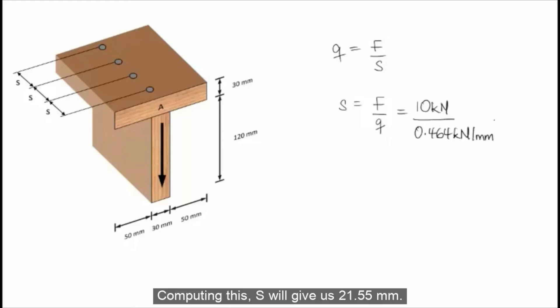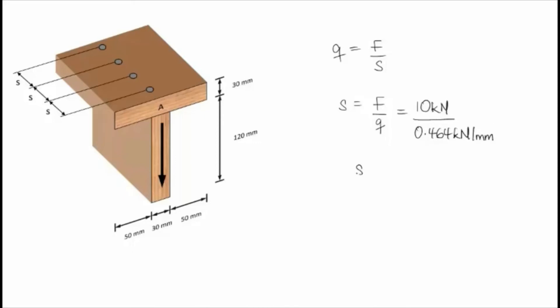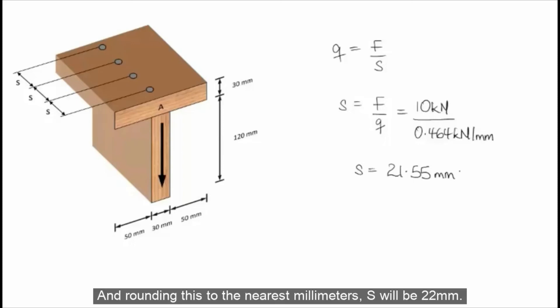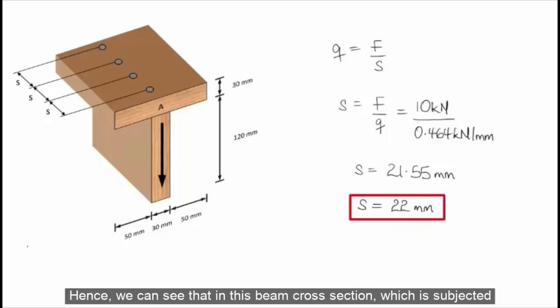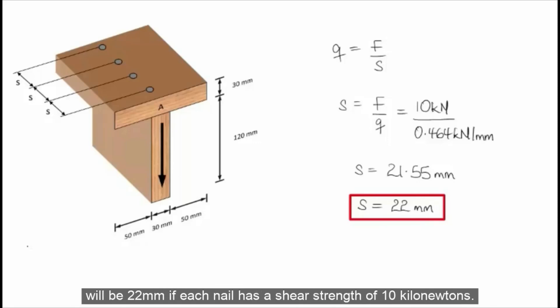Computing this, S gives us 21.55 millimeters. Rounding to the nearest millimeter, S will be 22 millimeters. Hence, in this beam cross-section subjected to an internal shear force V of 50 kilonewtons, the maximum nail spacing S will be 22 millimeters if each nail has a shear strength of 10 kilonewtons.